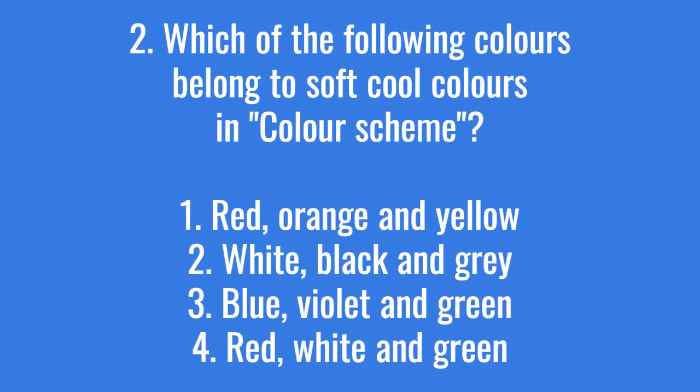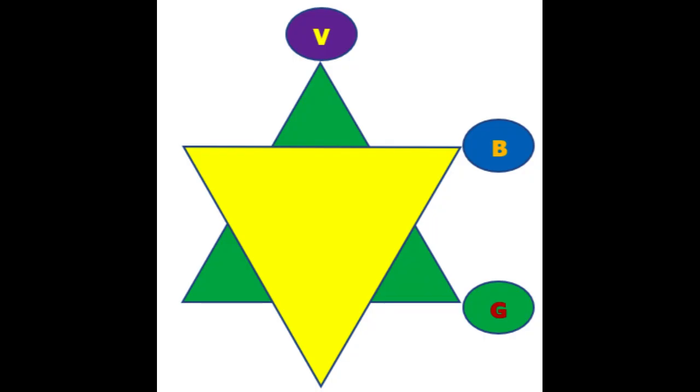Which of the following colors belong to soft-cool colors in a color scheme? The right answer is option 3: blue, violet, and green. The first three colors in the color triangle refer to the cool colors.